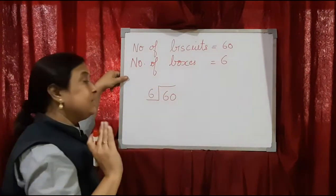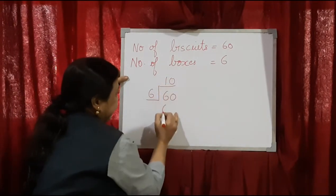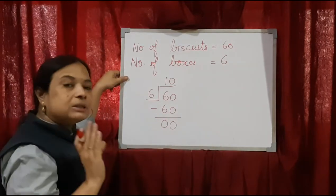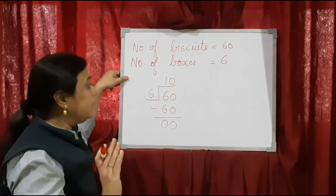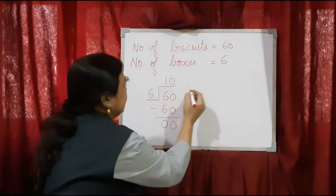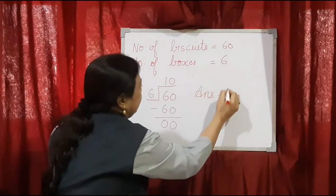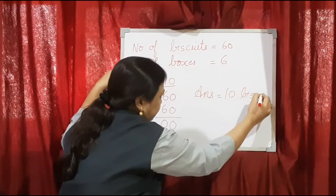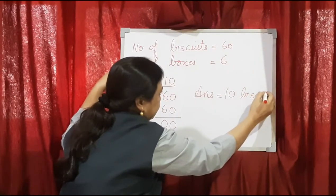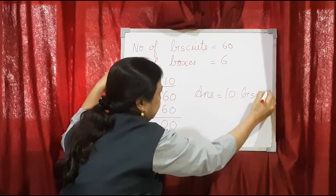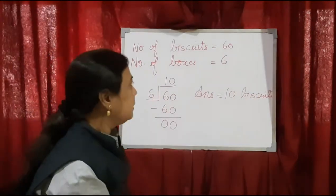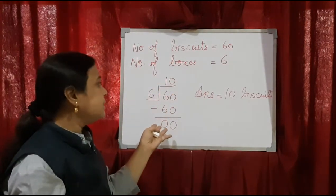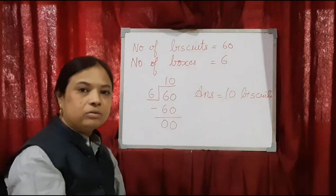6 tens are 60. So in one box there will be 10 biscuits. In the answer, just write down 10 biscuits. We will first write down the statement, below that write down the sum, and on the side you can write down the answer.